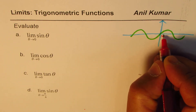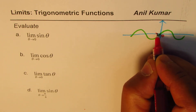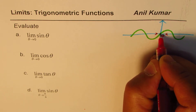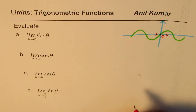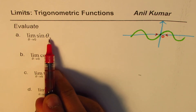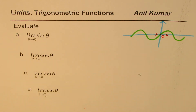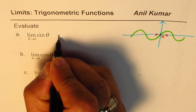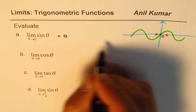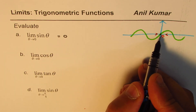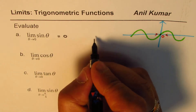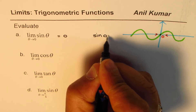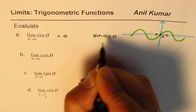You can clearly see that when you approach 0 from either side — whether from the left or from the right — you are approaching a value of 0. Since sine is a continuous function, the limit is the same as the value of the function at that point. Therefore, the limit of sine θ as θ approaches 0 is equal to 0.